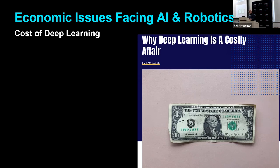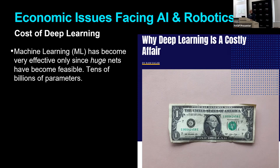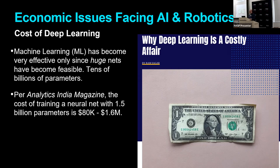The first economic issue is simply the cost of deep learning. As you heard last week, machine learning, and especially the form of it called deep learning, is turning out to be a very, very powerful tool for almost every type of AI. But the problem is that machine learning has become very effective only since huge nets have become feasible — we're talking about tens of billions of parameters. Those nets are so large that it takes a very large computer with a lot of memory even to process them, and the amount of computer time and energy required is considerable.